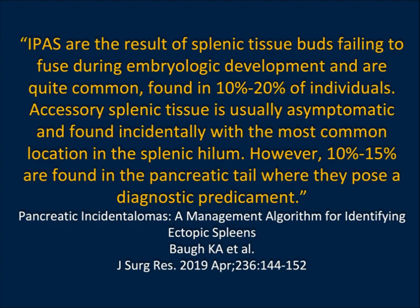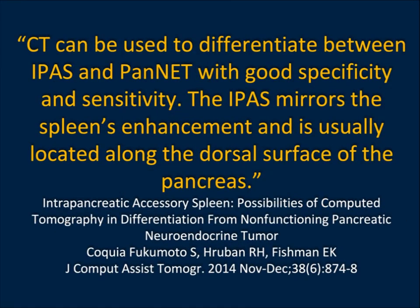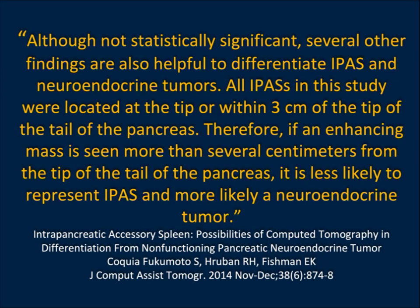Ectopic splenic tissue is the result of splenic tissue buds failing to fuse during embryologic development, and is common. Accessory splenic tissue is usually asymptomatic and found incidentally, with the most common location being the hilum of the spleen. However, up to 15% are seen in the pancreatic tail, and this is when they're diagnostically difficult. CT can differentiate between intrapancreatic accessory spleens and neuroendocrine tumors with high sensitivity and specificity. Stephanie Cochlear's article made the point that all intrapancreatic accessory spleens in the study were located at the tip or within 3 cm of the tip of the tail of the pancreas. Therefore, if an enhancing mass is seen more than several centimeters from the tip of the tail, it's unlikely to be anything but a neuroendocrine tumor.